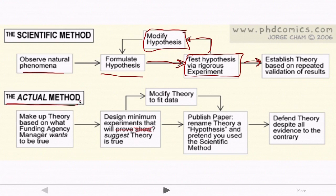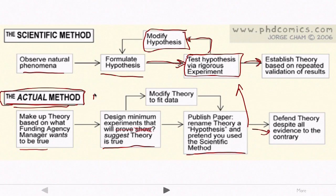They point out that the actual method sometimes looks quite different. And so they say what actually happens is you make up some theory based on what the funding agency wants to be true. You design some minimal experiments that might suggest that the theory is true. And you then publish a paper renaming theory to hypothesis and pretending that you actually use the scientific method. And finally you defend the theory despite all evidence to the contrary. And all too often it's actually this method that winds up getting used when people are doing startups and creating new ventures. And so we want to avoid doing this actual method and try and stick more closely to the actual scientific method when we're going about new venture creation. But it's really hard for a number of reasons that I'll talk about in the next video.